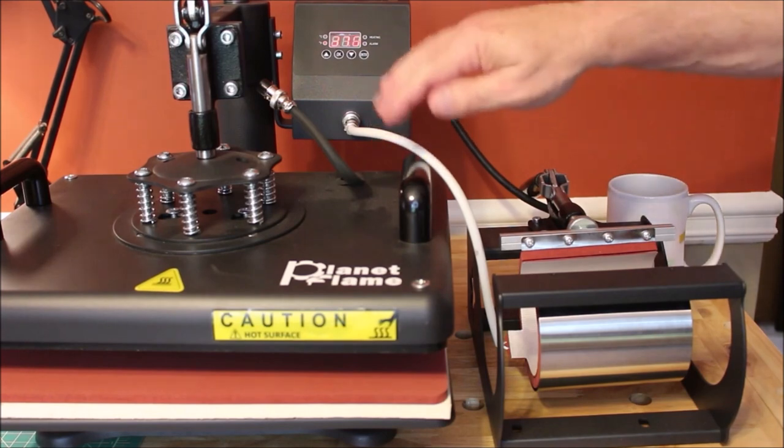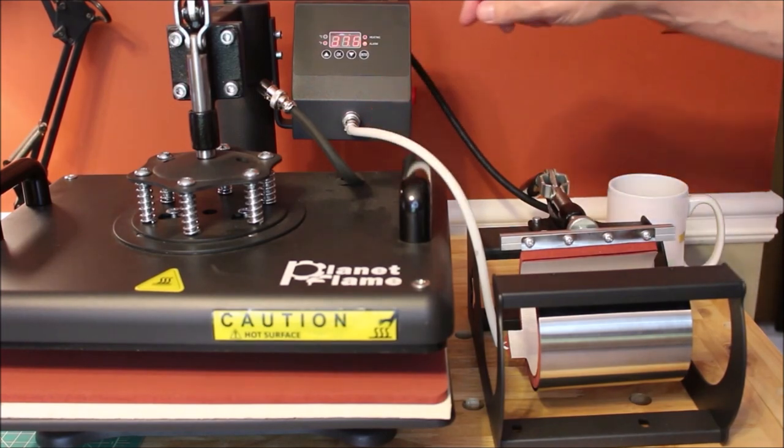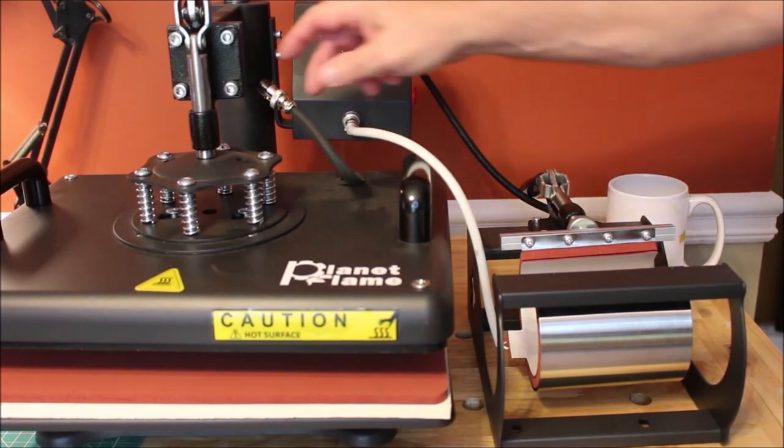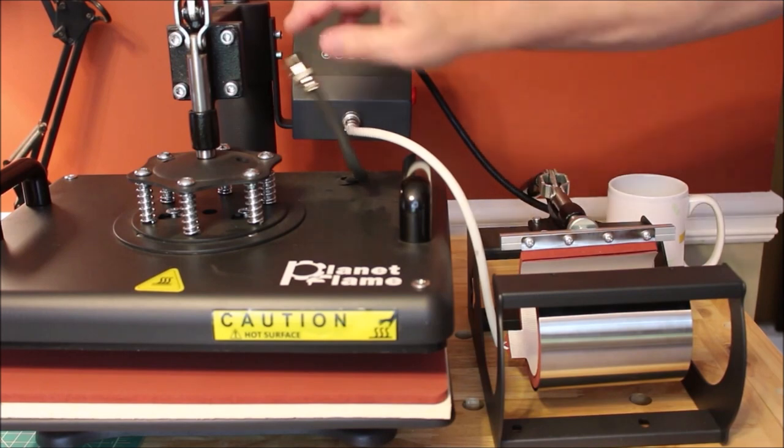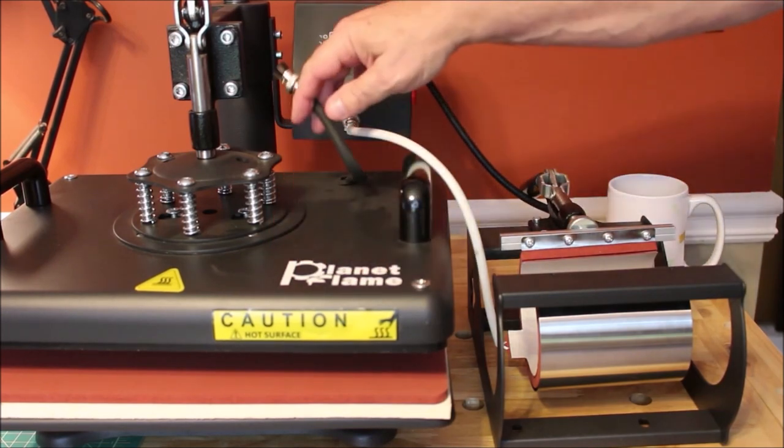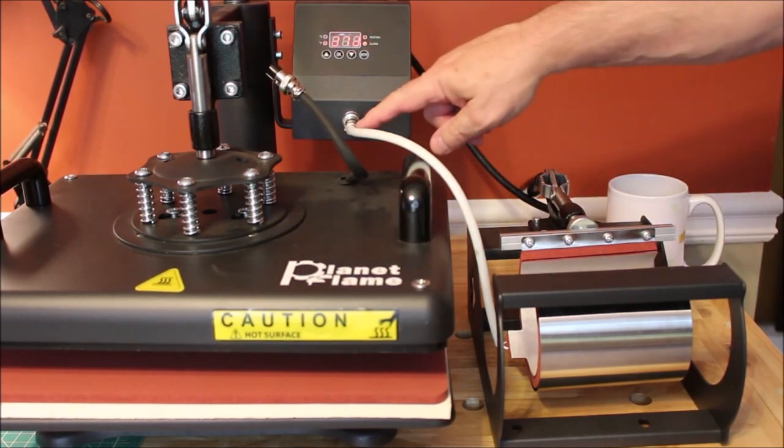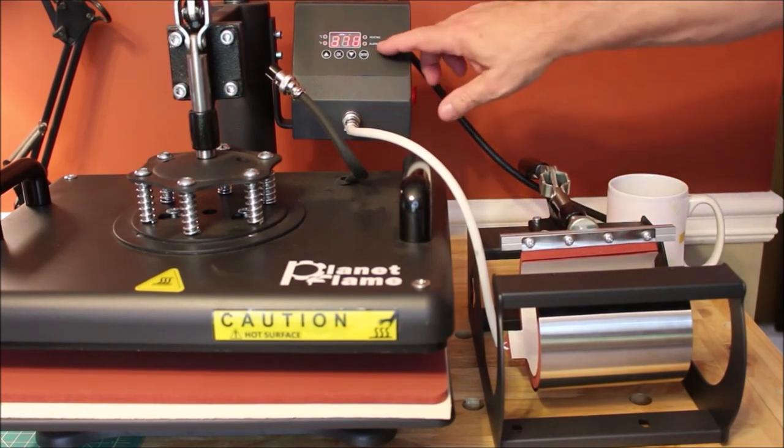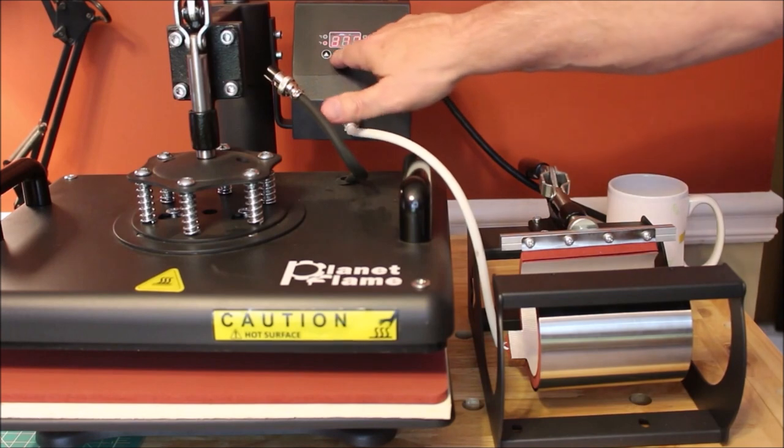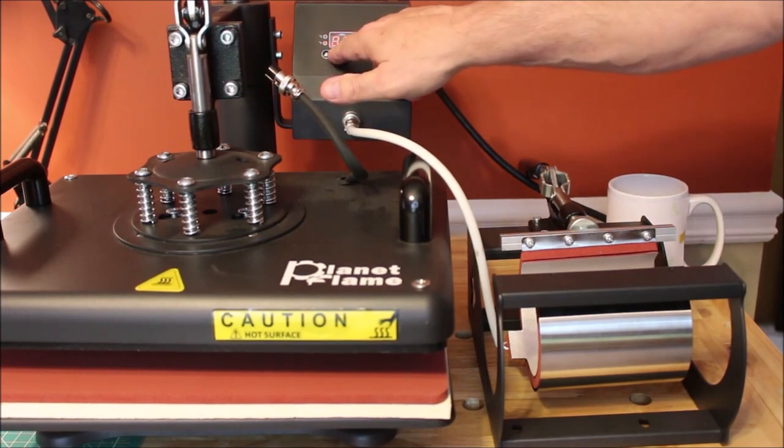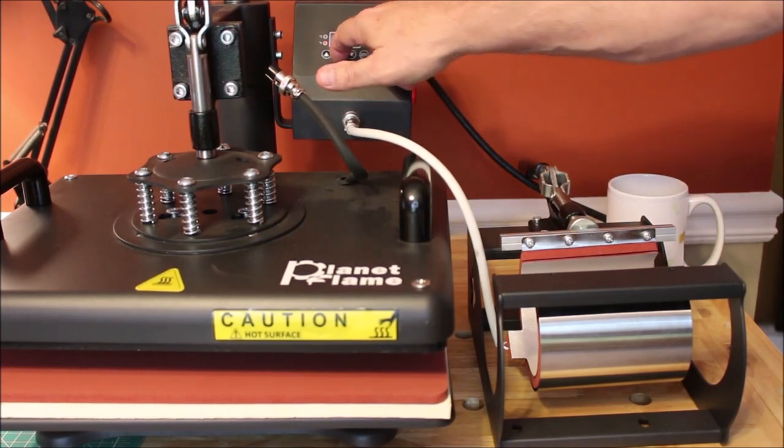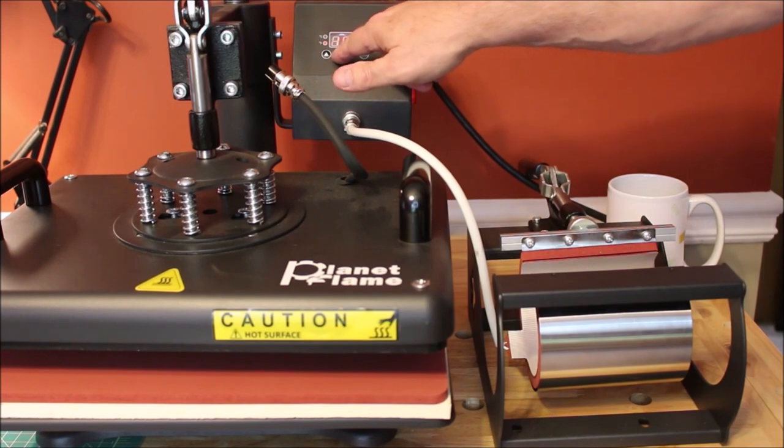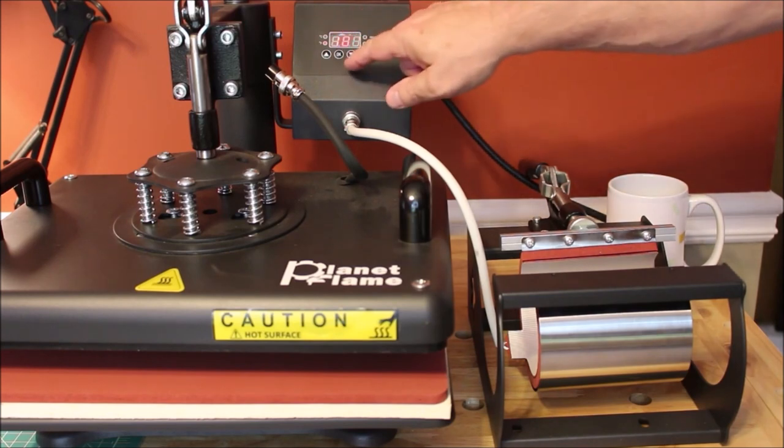Okay, as you can see I have the five-in-one combo heat press. You can see I've just connected the main platen here and I just connected up the little standalone mug press here. I've got this set to, let's see, 370 degrees, and I've got 180 seconds or three minutes.